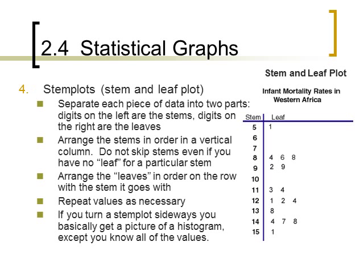So notice how the stems go. They start at five because that was our first data number, 51, and then it goes in sequential order. It doesn't skip any numbers and it ends with the last stem at 15, which is 151. If you turn a stem plot sideways, you basically get a picture of a histogram except you know all the values.